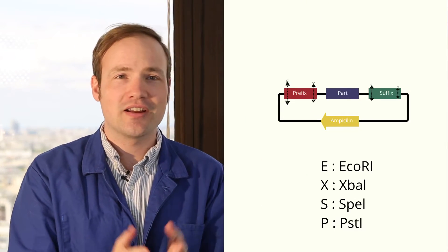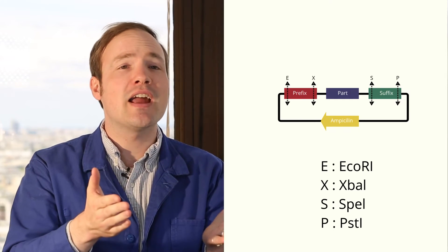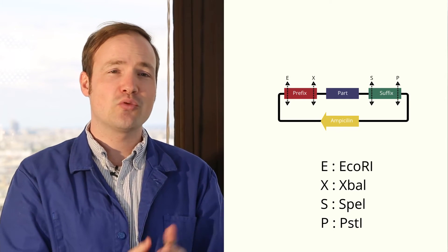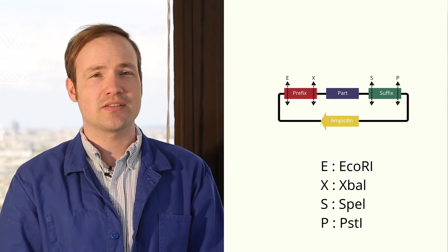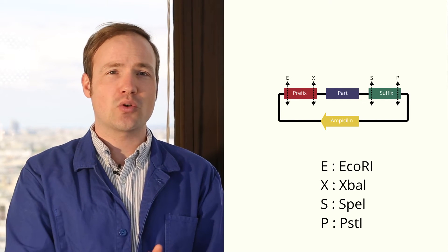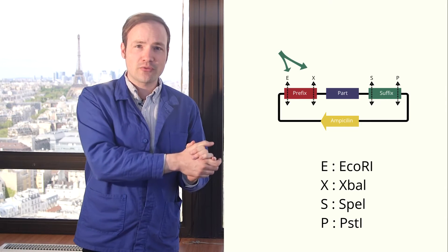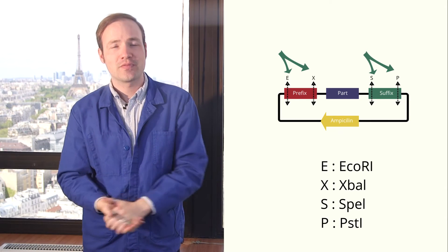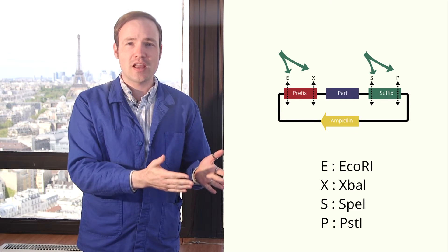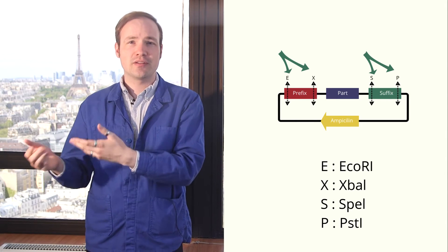A biobrick is nothing but a piece of DNA on a plasmid with standard restriction sites. Every biobrick is required to have four standard restriction enzyme sites. Two at the front and two at the back. EcoR1, XbaI, SpeI, PstI.